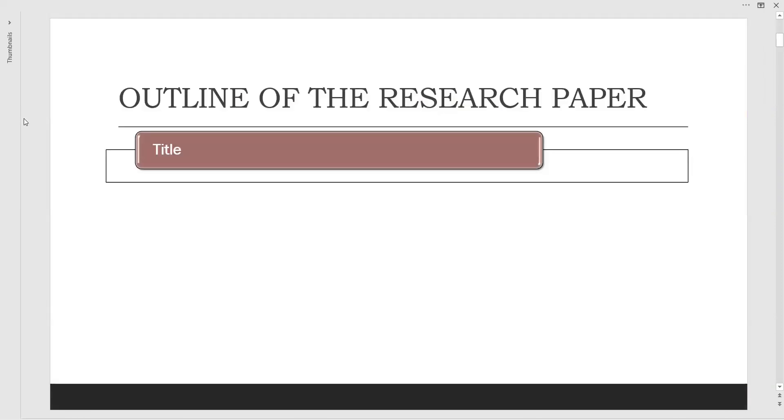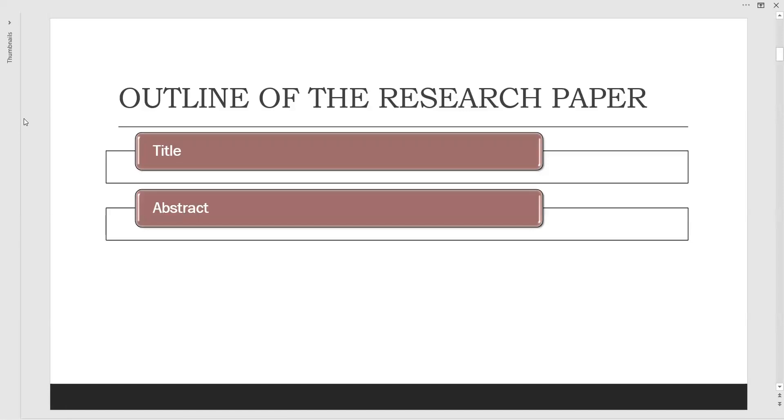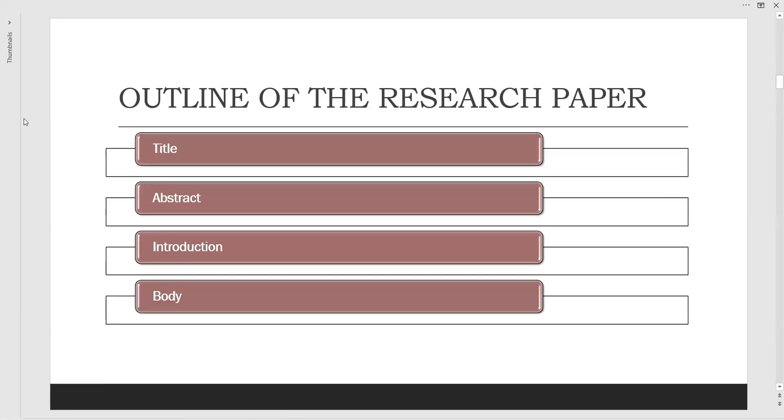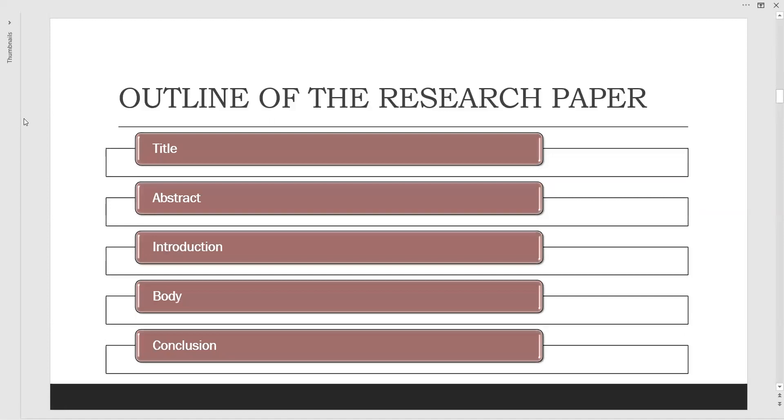Now let us see the outline of the research paper. Here we are going to show you what are the salient points we have to remember while writing a research paper. First of all we have to prepare an outline. The outline consists of title, an abstract, introduction, body and conclusion.